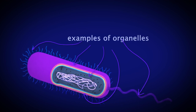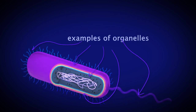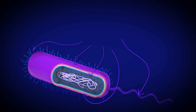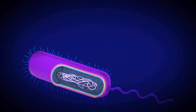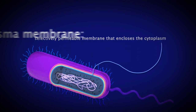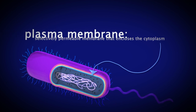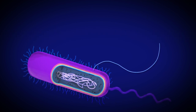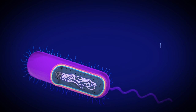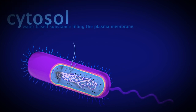Organelles are basically little organs in the cells, and each organelle has a different function, just like our body's organs. Prokaryote cells are bound by a plasma membrane, which protects the cell from its surroundings and selectively allows materials in and out of the cell. They are filled with a semi-fluid substance called cytosol, where the organelles are suspended.